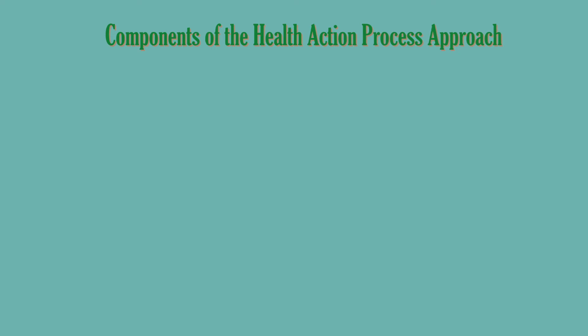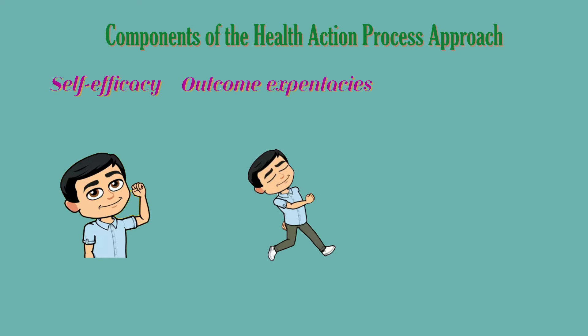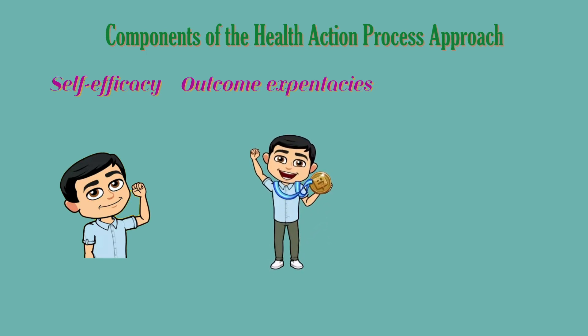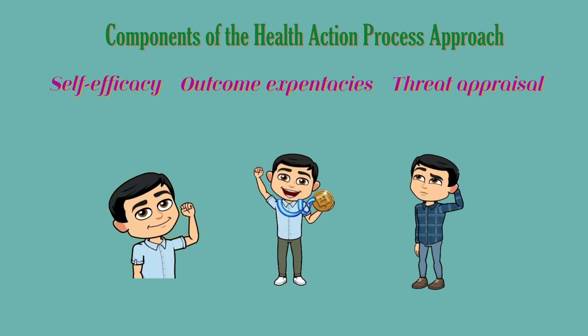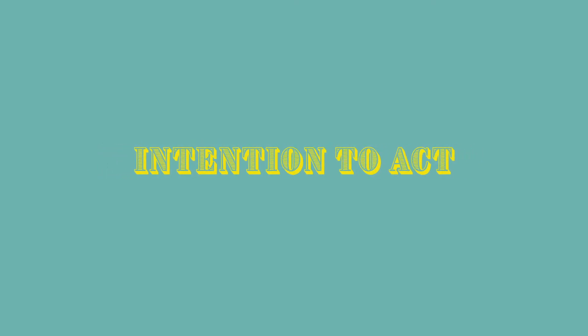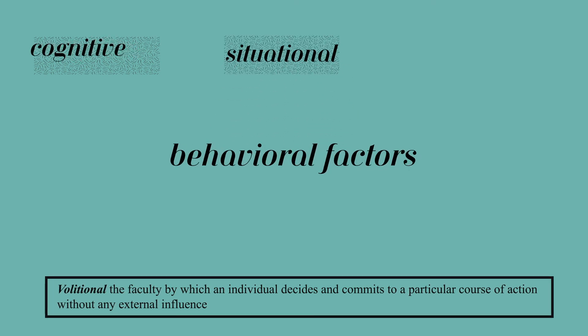According to the health action process approach, the motivation stage is made up of the following components. Self-efficacy: I am confident that I can stop smoking. Outcome expectancies: stopping smoking will improve my health, which includes social outcome expectancies — for example, other people want me to stop smoking, and if I stop smoking I will gain their approval. Threat appraisal, which is composed of beliefs about the severity of illness and perceptions of individual vulnerability. The end result of the motivation stage is an intention to act. The action stage comprises cognitive, volitional, situational, and behavioral factors.